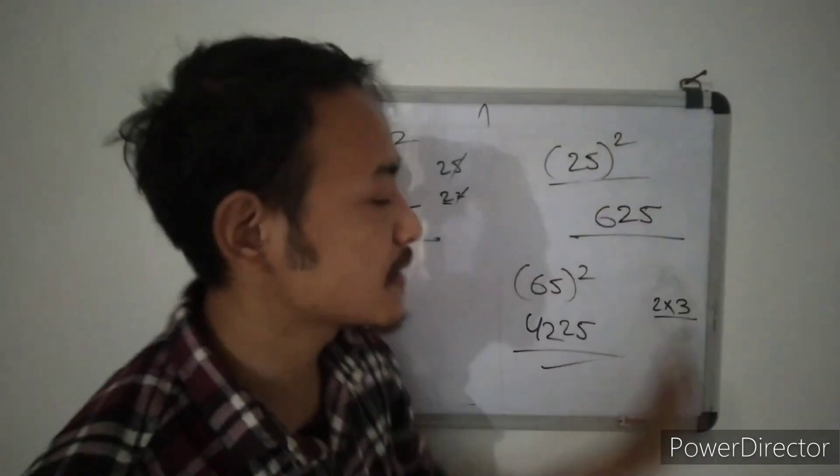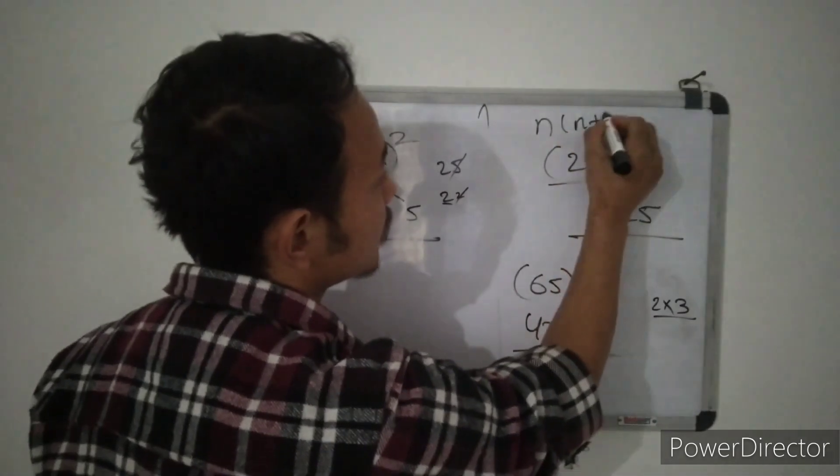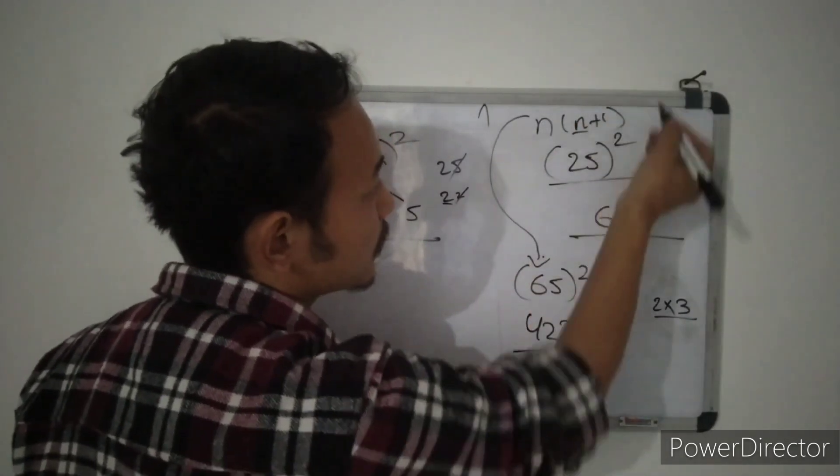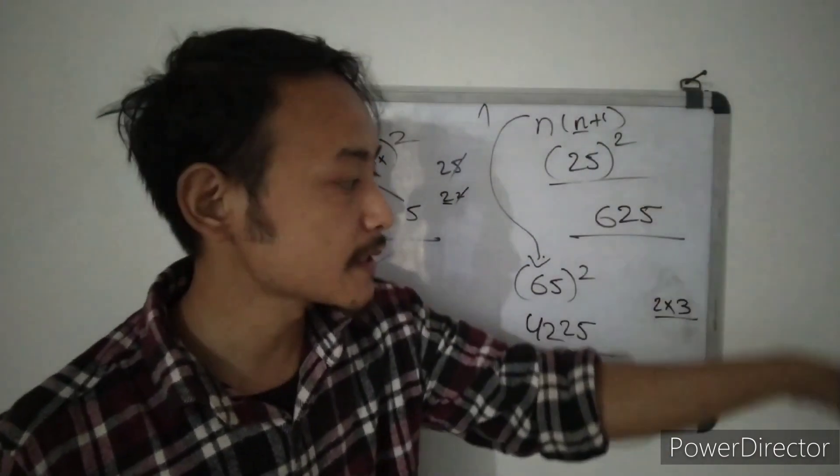So the theory is n plus one. Two plus one, right, and what's n? Two plus one gives you three. Multiply two into three equals six.